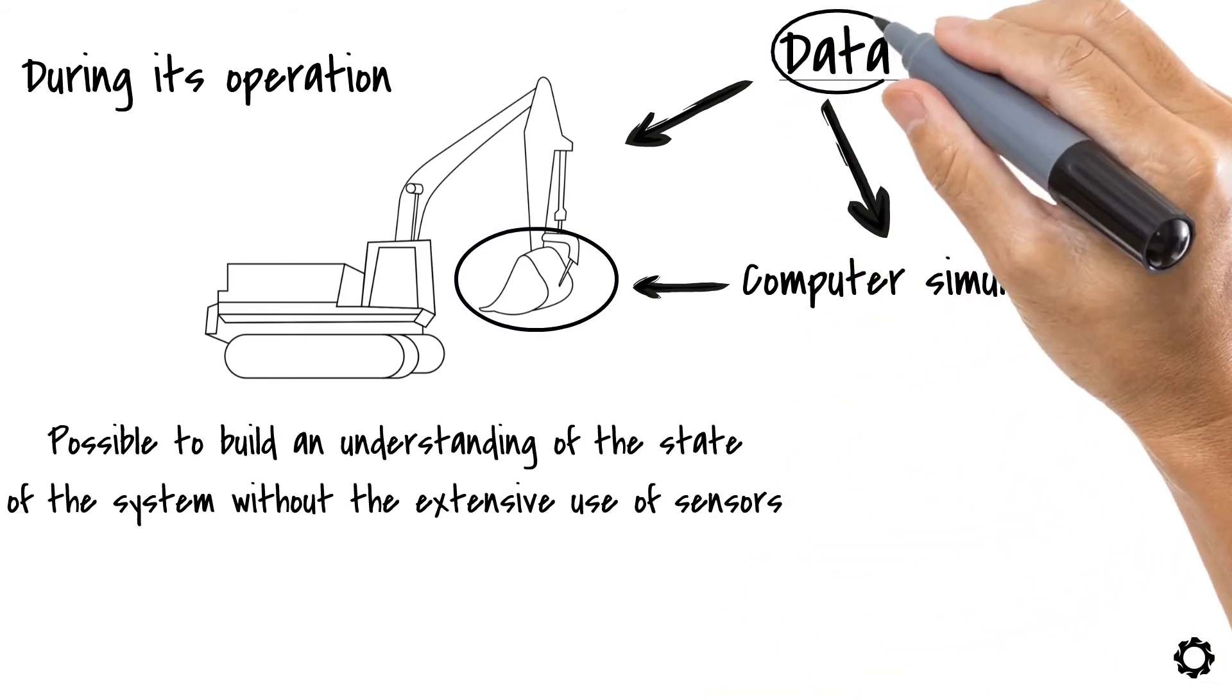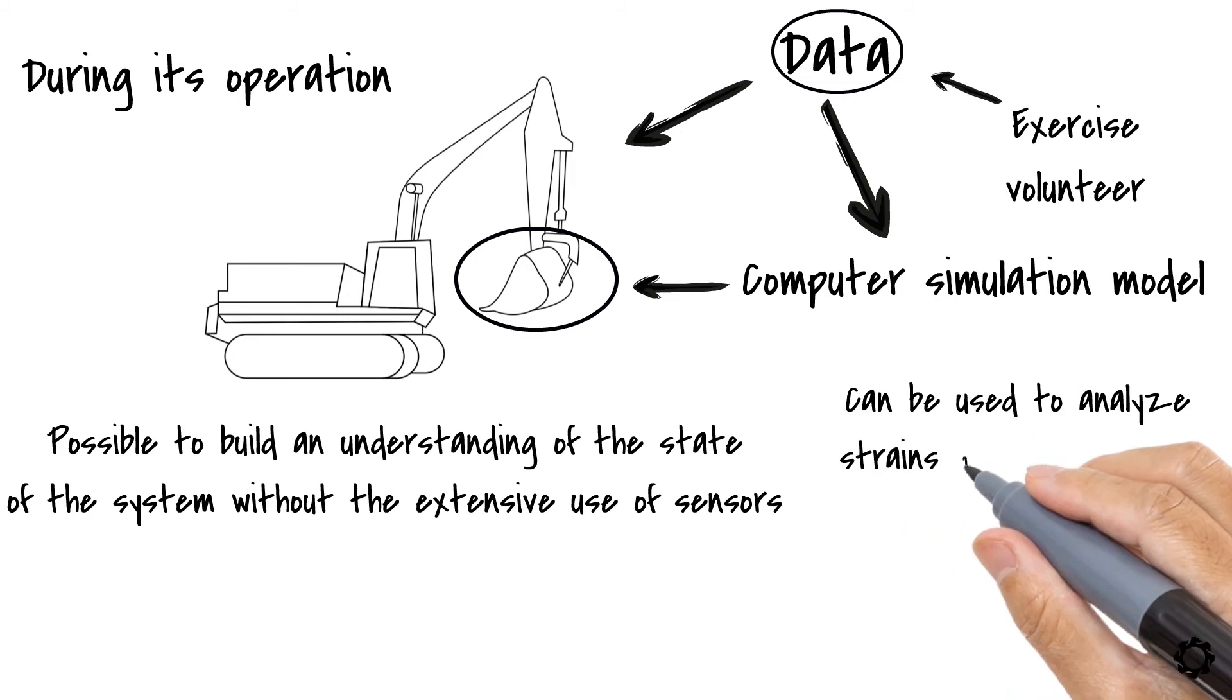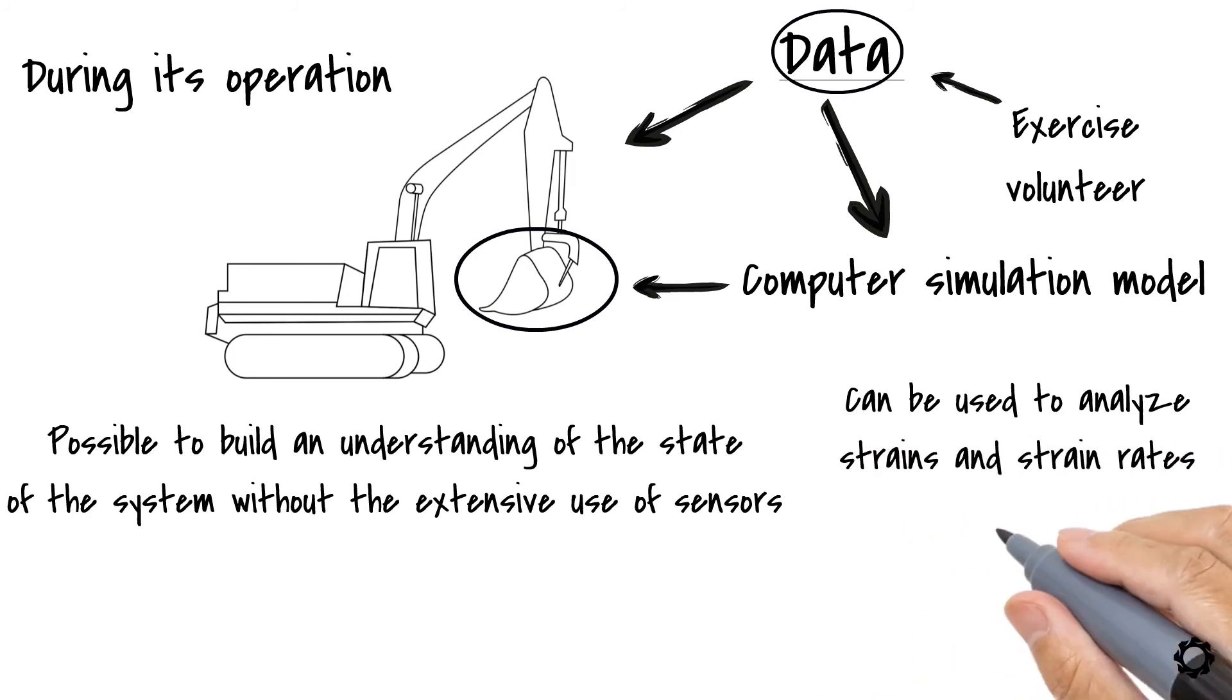This makes it possible to build an understanding of the state of the system without the extensive use of sensors. As an example, motion data measured from an exercise volunteer can be used to analyze strains and strain rates imposed on the volunteer's femur bone.